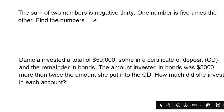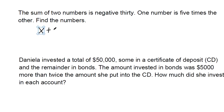The sum of two numbers is negative 30. We don't know what those two numbers are, so we can call them x and y. So the sum of two numbers is negative 30. That's how we can translate that first equation.